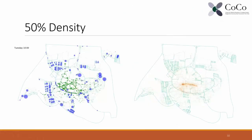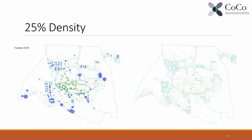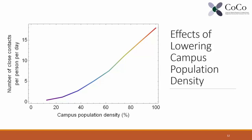We can also run hypothetical scenario simulations by reducing population density. When the total population is reduced to 50%, the cumulative heat map still shows some activity along the corridor between Science One and the Marketplace, but it is much better than the original. When population density is further reduced to 25%, close contact is basically gone. The question is: how much population density reduction is needed and most appropriate to achieve our goal? We conducted a systematic simulation reducing population density from 100% down to 10%, producing a plot showing the reduction in close contacts achieved by each level of population reduction.